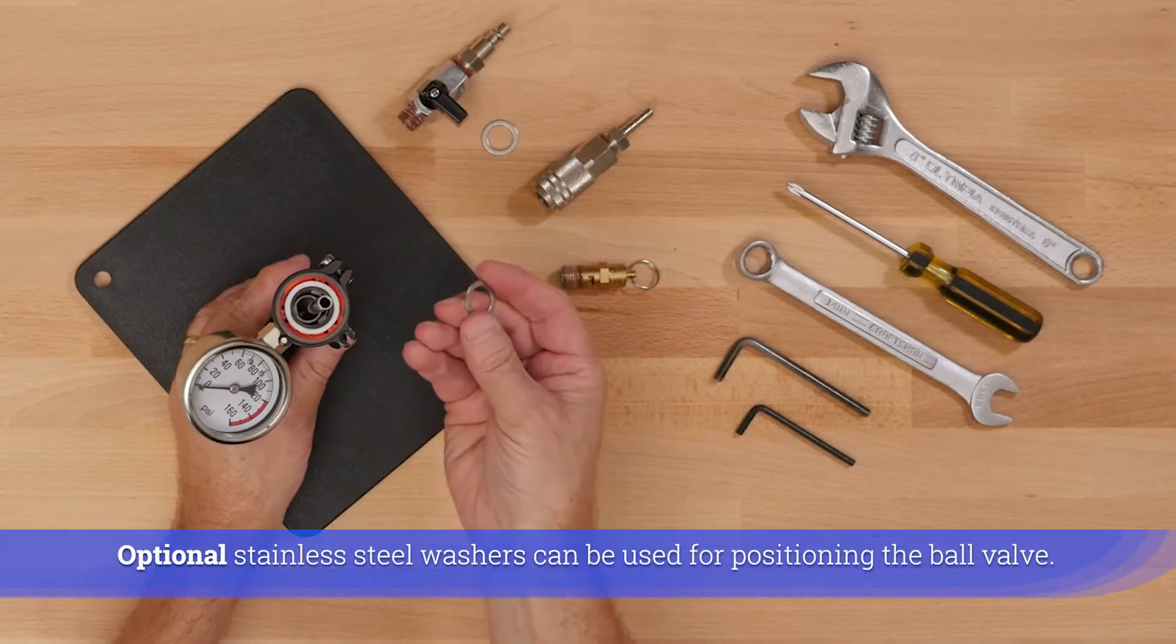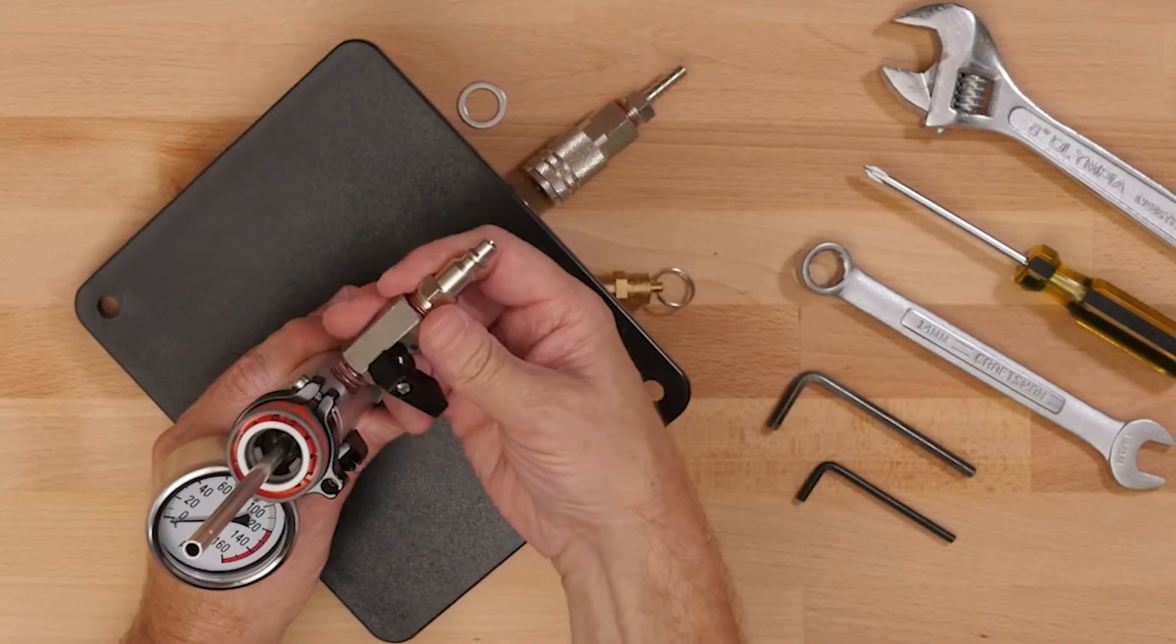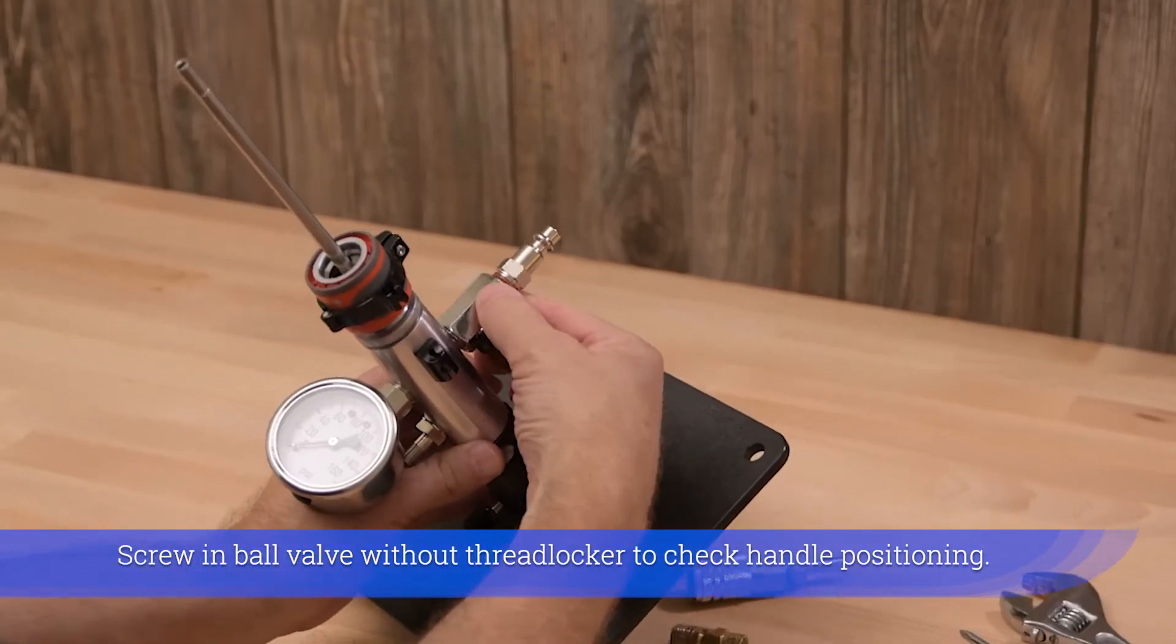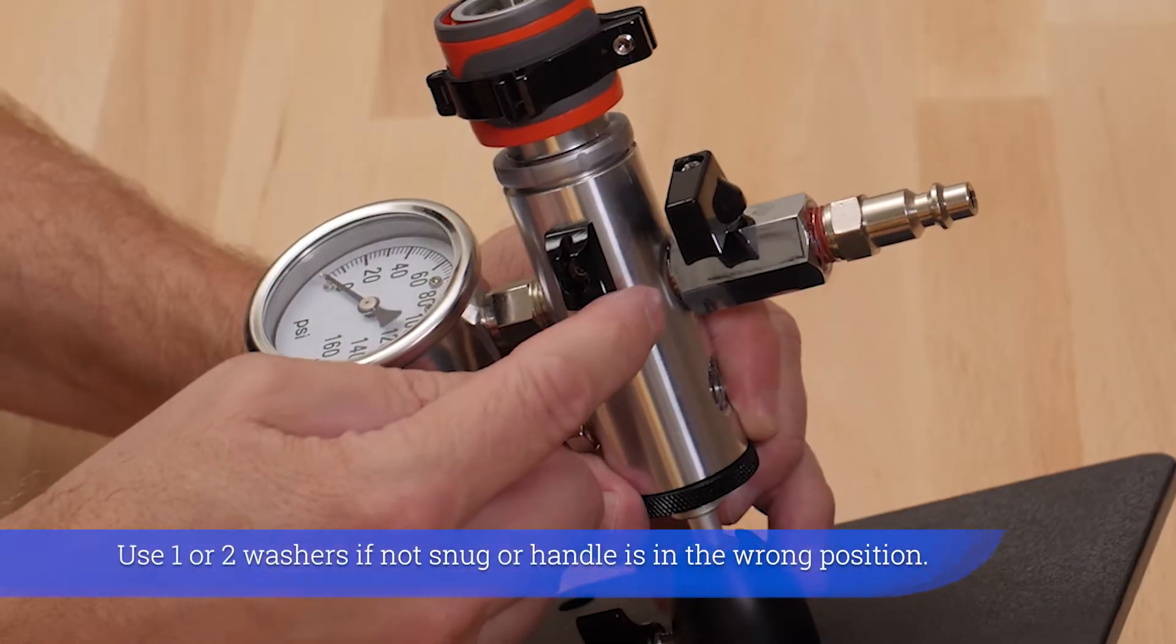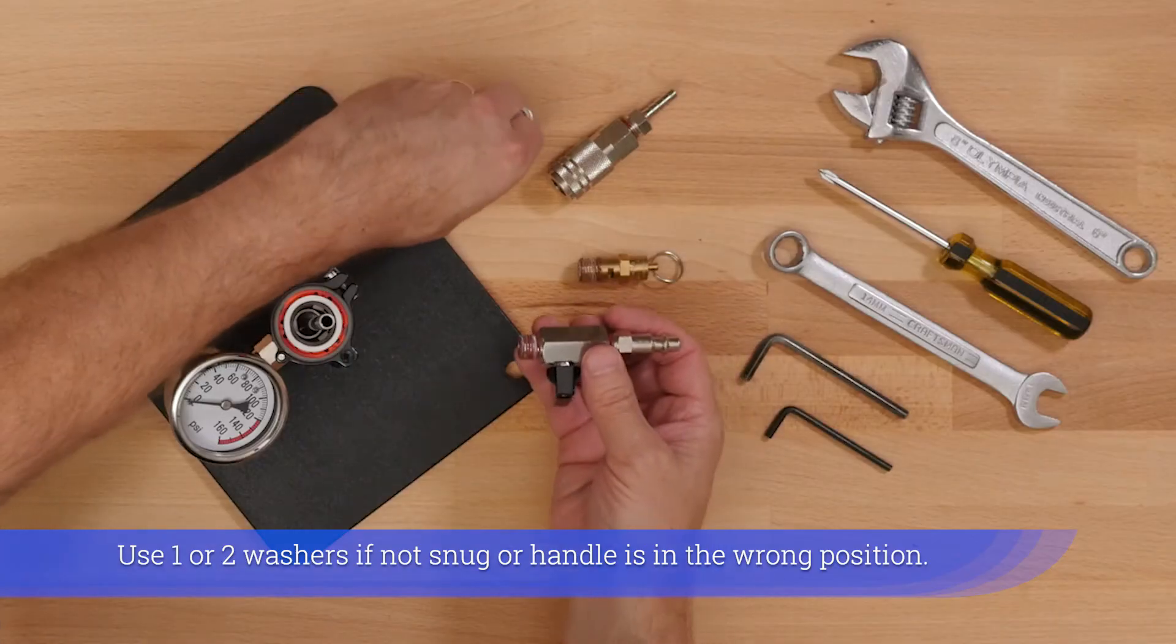Optional stainless steel washers can be used for positioning the ball valve. Screw in ball valve without thread locker to check handle positioning. Use one or two washers if not snug or handle is in the wrong position.